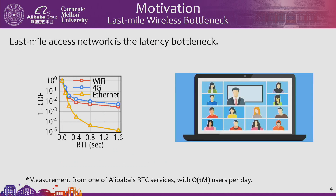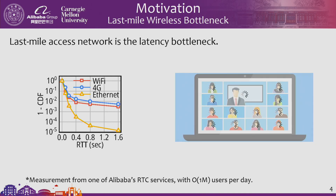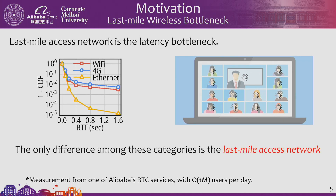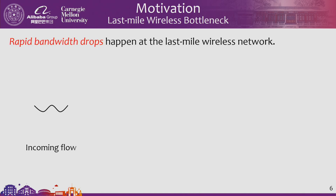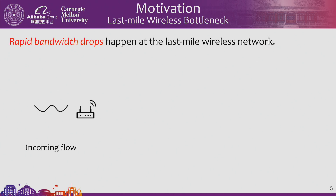For a real user like Alice using video conferencing with her teammates, such high latency will result in stutter. We measured millions of users every day for a week, and the only difference is the type of access network. So something must be happening on the last-mile access network. One observation is that in the wireless last-mile access network, there are rapid bandwidth drops. The capacity fluctuates due to competition with other users in the same physical space, or interference from other devices such as microwave ovens.